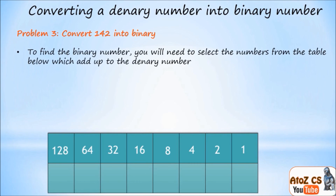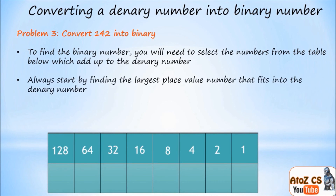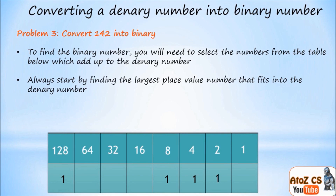We're going to use the same method — select the numbers from the table which will add up to the denary number, starting with the largest place value that fits. In this case it is 128. I need 128 plus 8, 4, and 2. I don't need any other numbers, so I replace all others with zero.